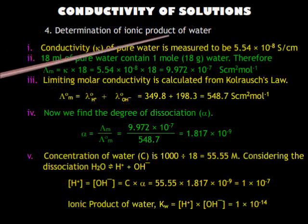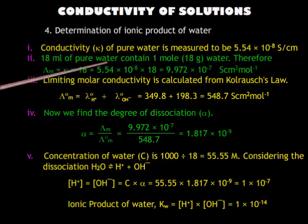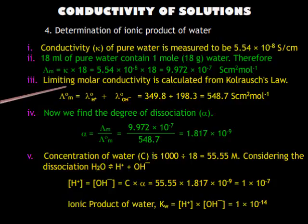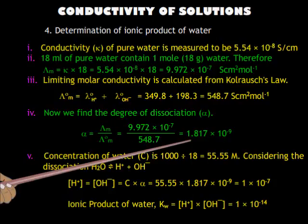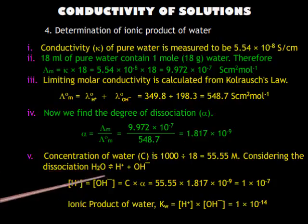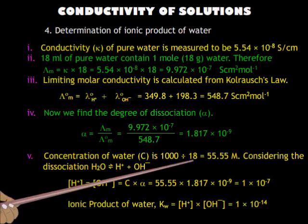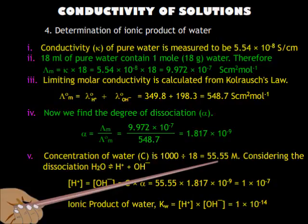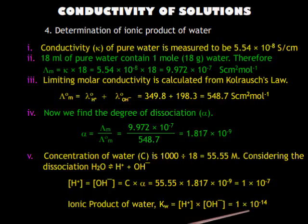Application 4: Determination of the ionic product of water. Measure the conductivity of pure water. Since 18 ml of water contains 18 grams or 1 mole of water, the molar conductivity can be calculated. The limiting molar conductivity is then calculated. The degree of dissociation comes out to be 1.817 × 10⁻⁹. The concentration of H⁺ ions equals the concentration of OH⁻ ions, which equals the molarity of pure water (1000/18 = 55.55 mol/L) multiplied by the degree of dissociation, giving approximately 1 × 10⁻⁷ mol/L. Therefore, the ionic product of water is 1 × 10⁻¹⁴.